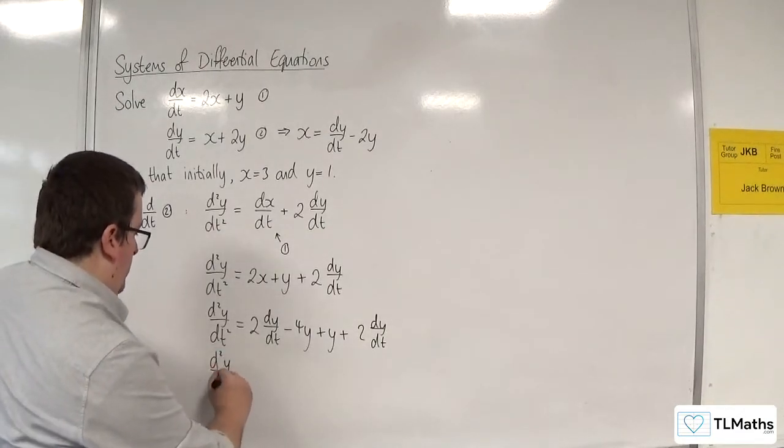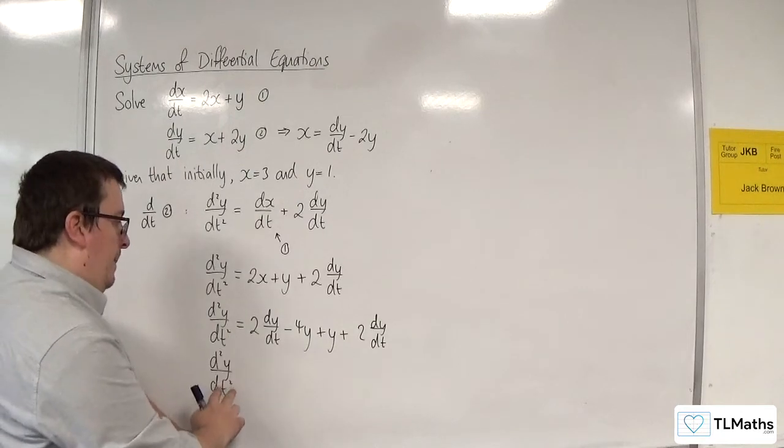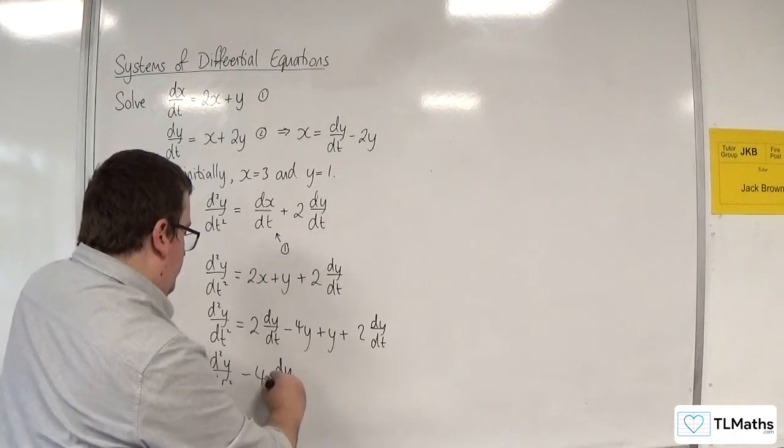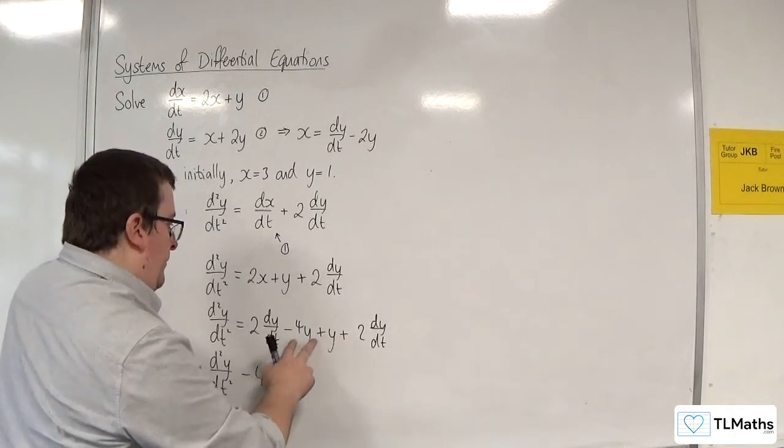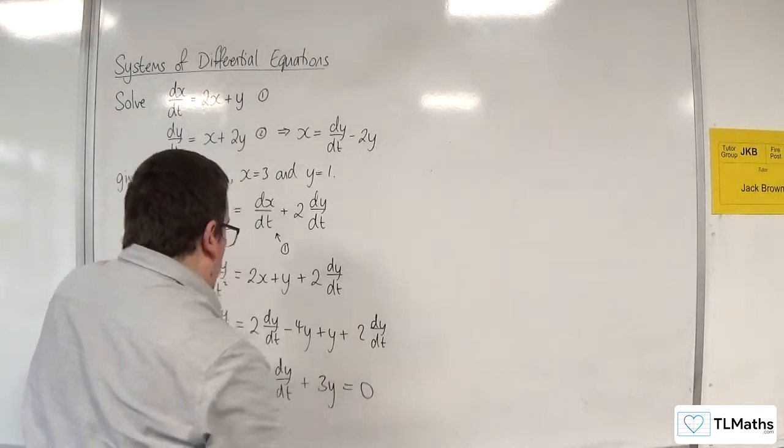So moving everything on to the left-hand side, d2y by dt squared, I've got take away 4 dy by dt. Minus 4y plus y is minus 3y, so we get plus 3y is equal to 0.